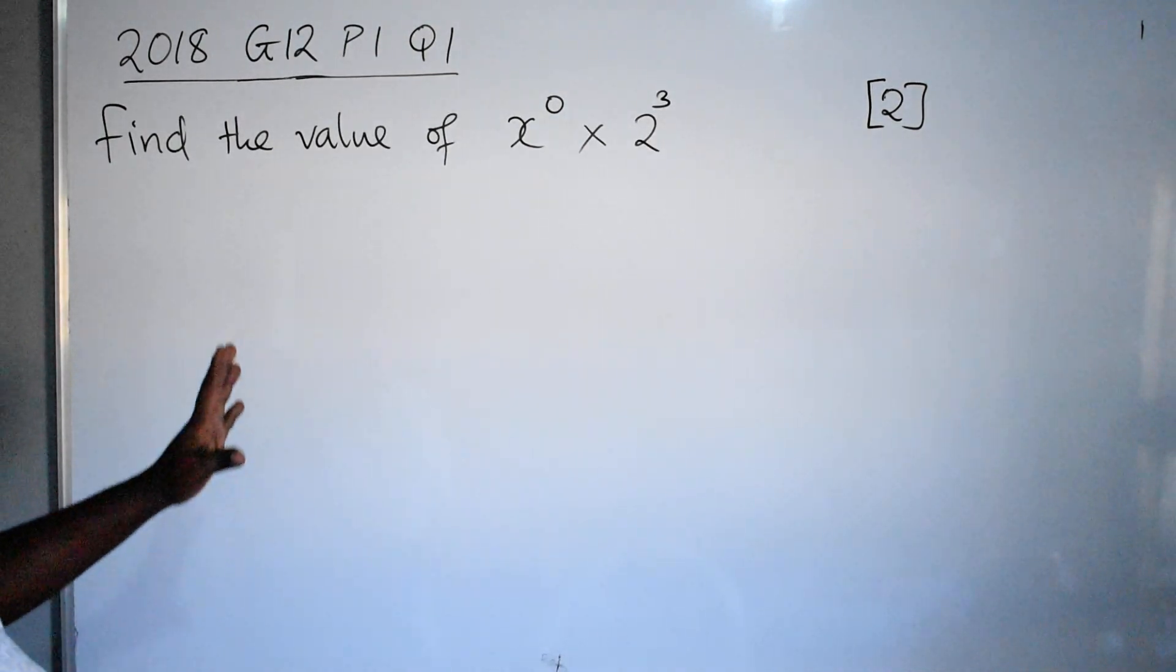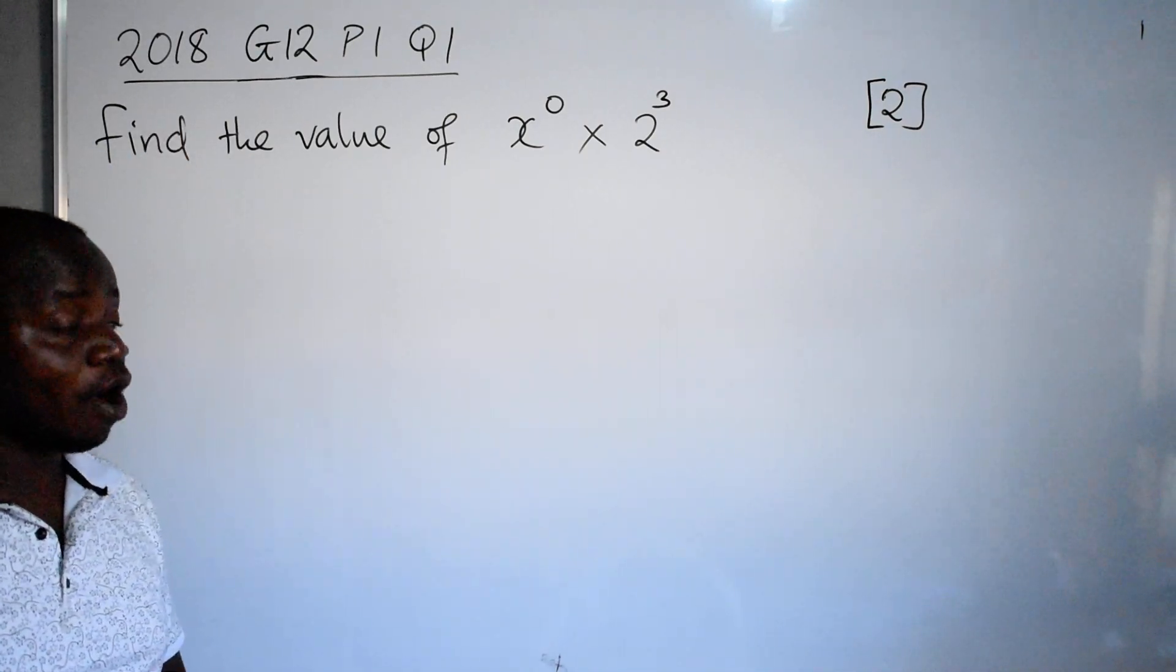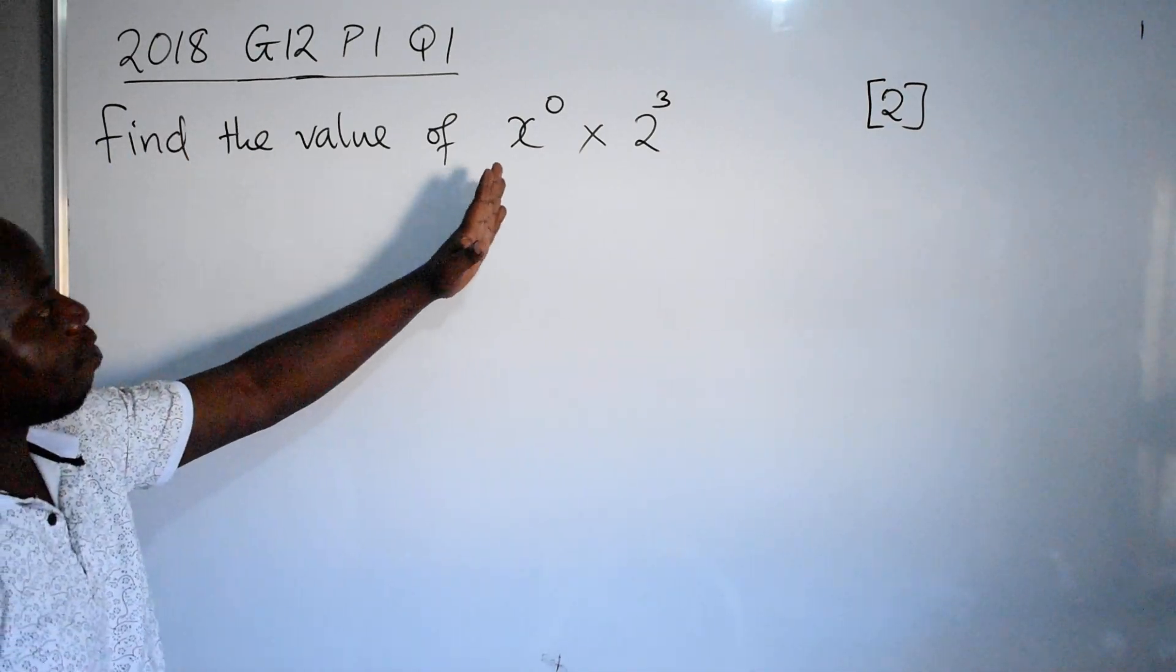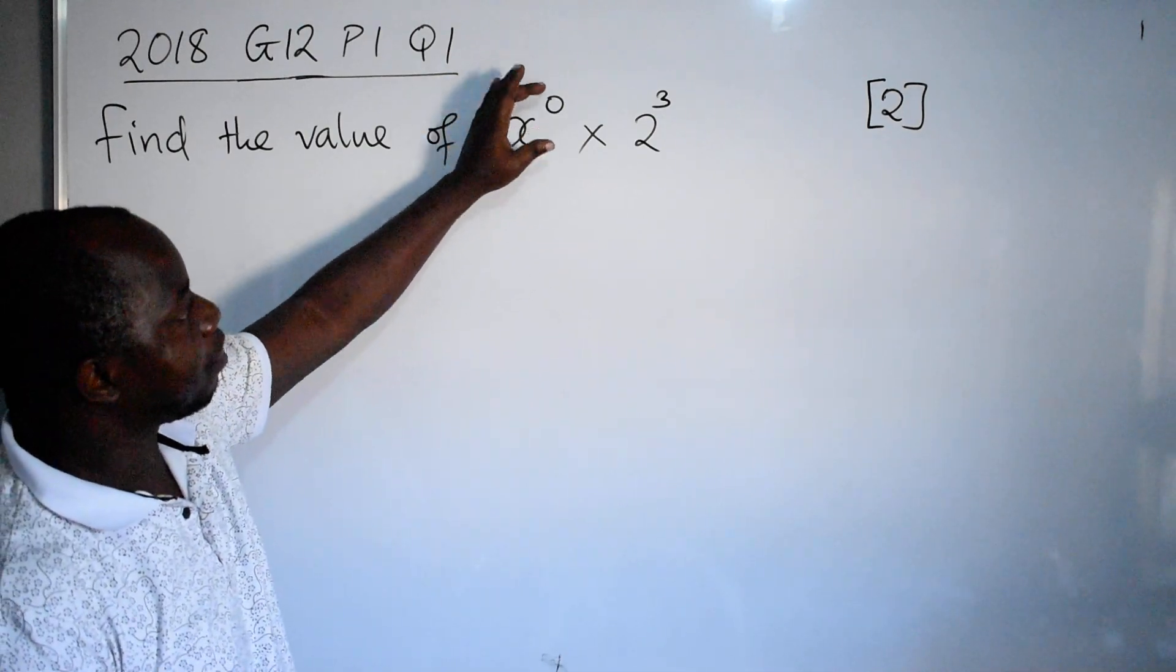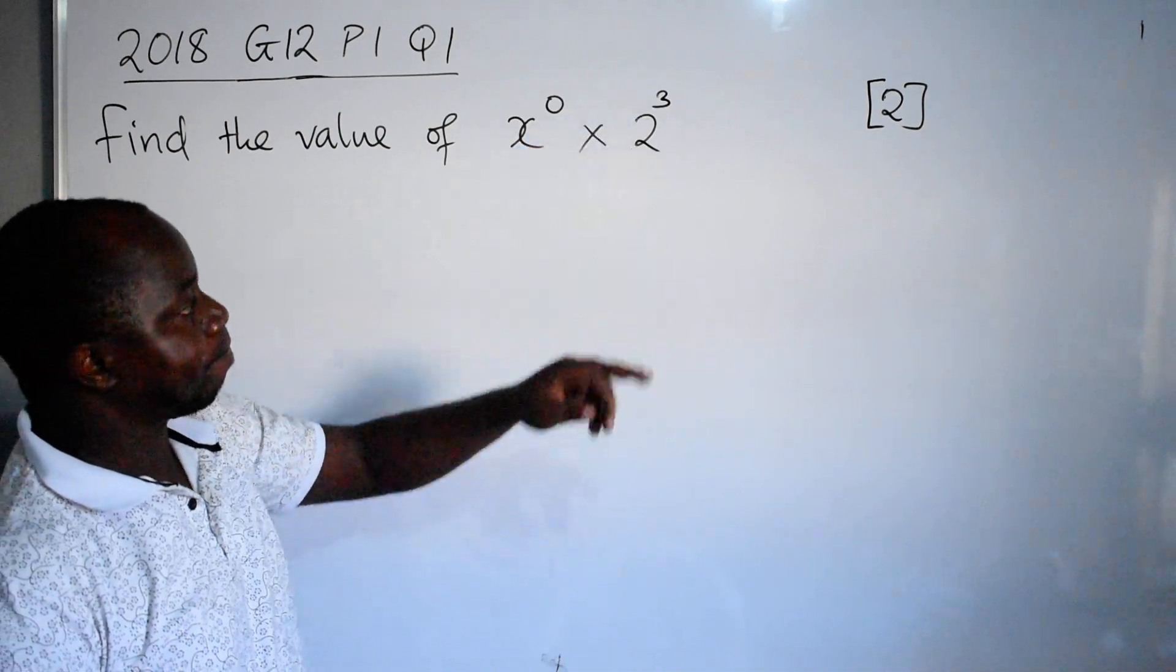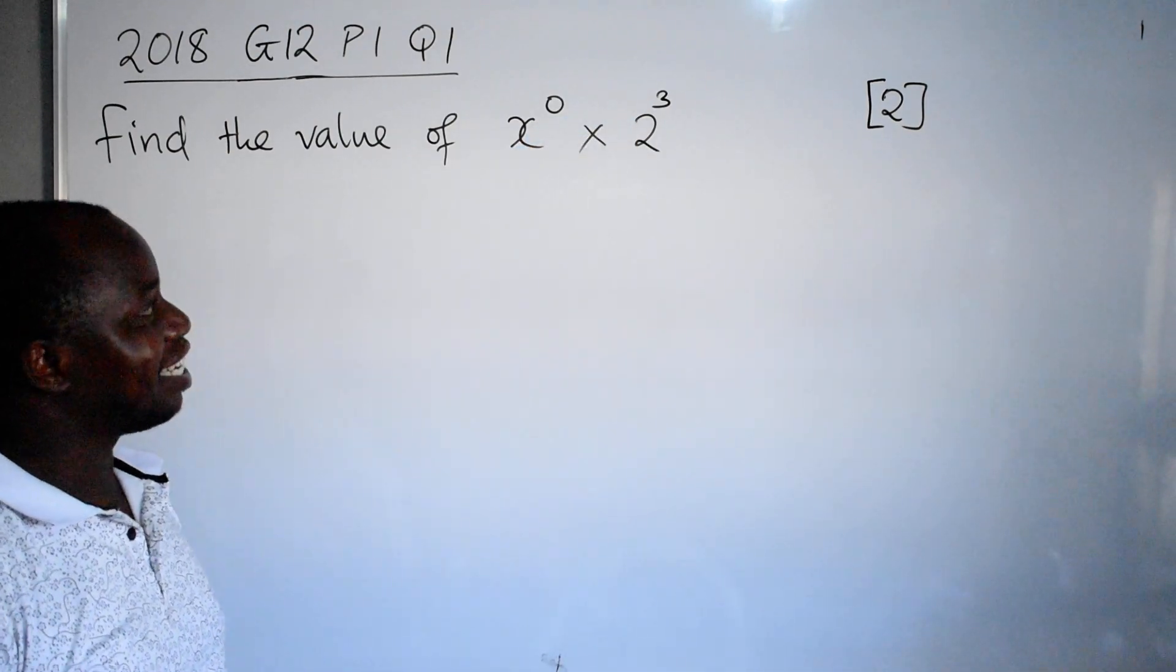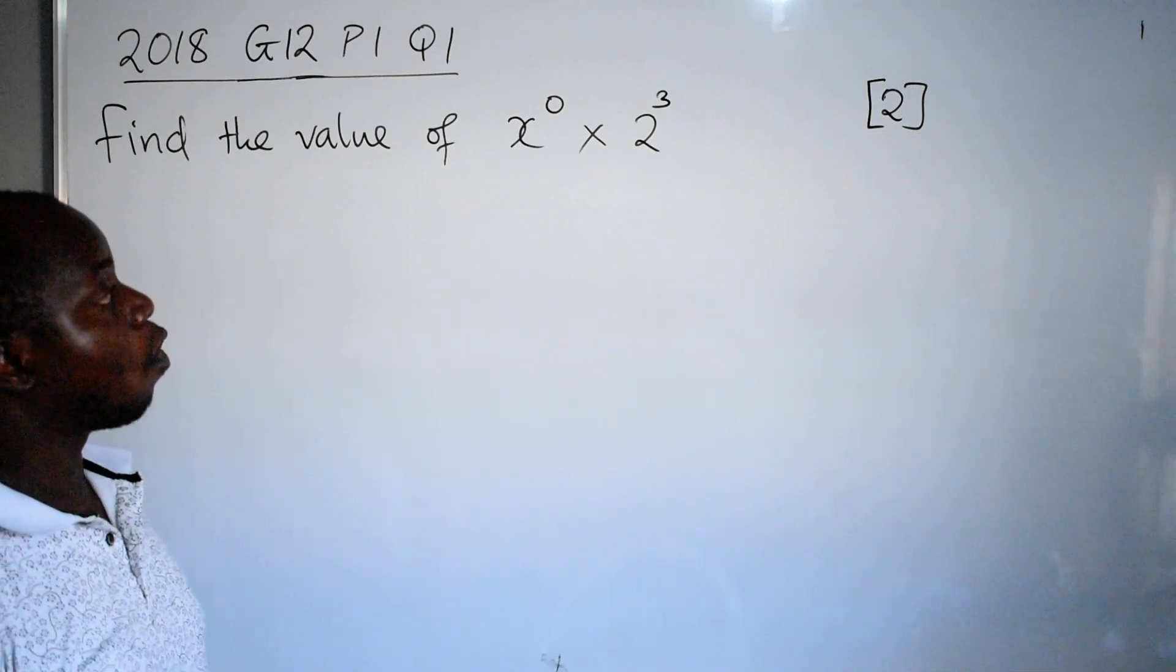Greetings, let's look at this question: 2018 Grade 12 Paper 1 Question 1. Find the value of x raised to the power 0 times 2 to the power 3. The question is coming from index notation or indices.